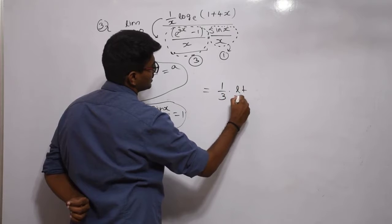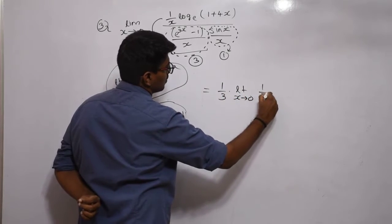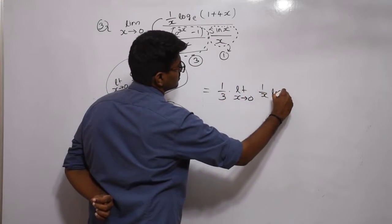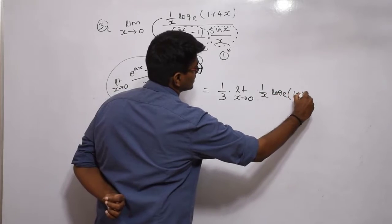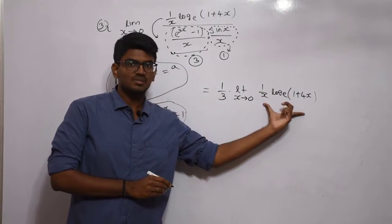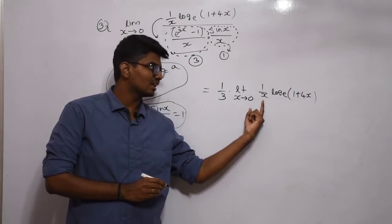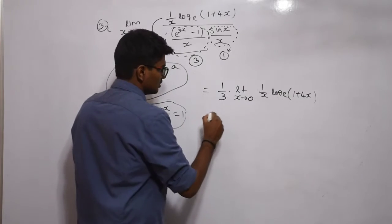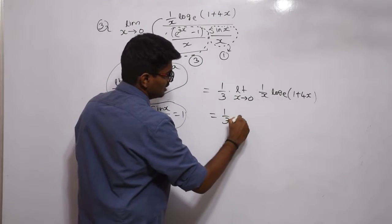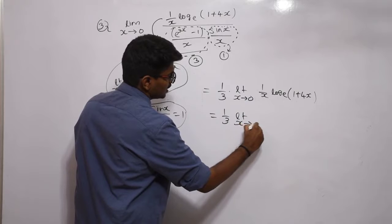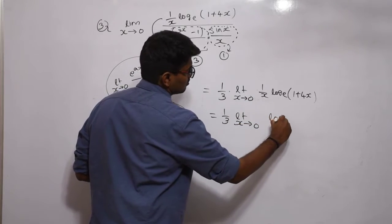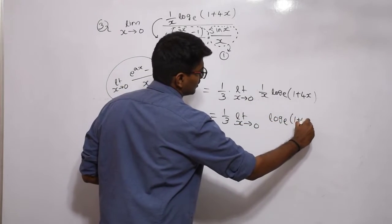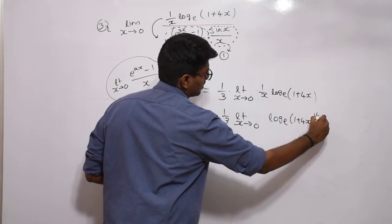Limit x tends to 0 of (1/x) log_e(1+4x). We know the principle of logarithms: if it's in multiplication, I can take it to the power. This equals (1/3) limit x tends to 0 of log_e[(1+4x)^(1/x)].